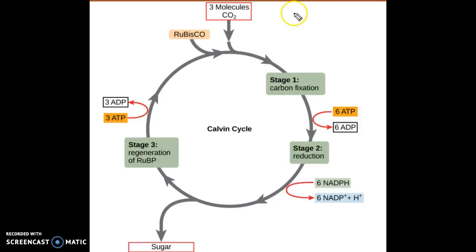So here is the Calvin cycle which is the main thing that happens in the light independent phases or the dark reactions.